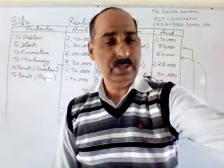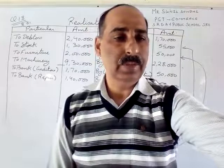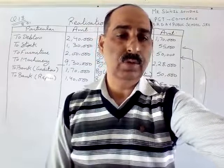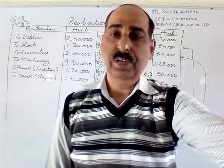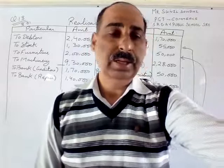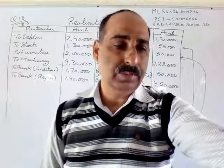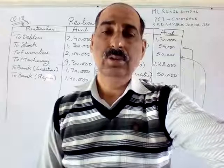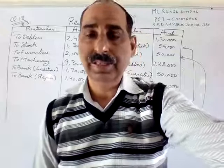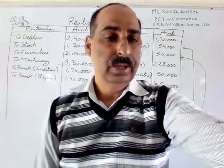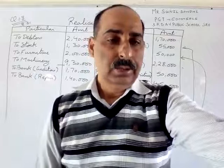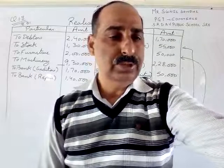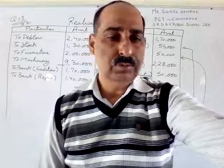The question states: Ramesh and Umesh are partners in the firm sharing profit in the ratio of their capital. Capital is given in the question — Ramesh 7 lakh and Umesh 3 lakh — so automatically the ratio will be 7:3. On 31st March 2013, their balance sheet was as follows.